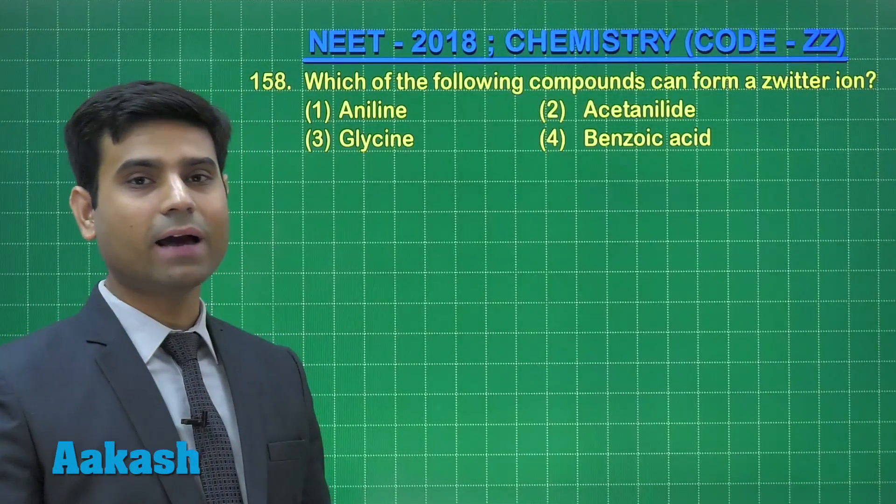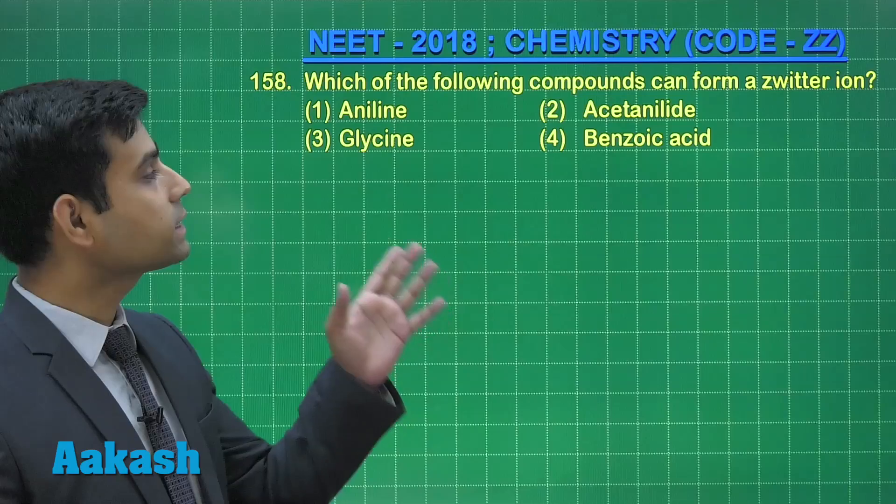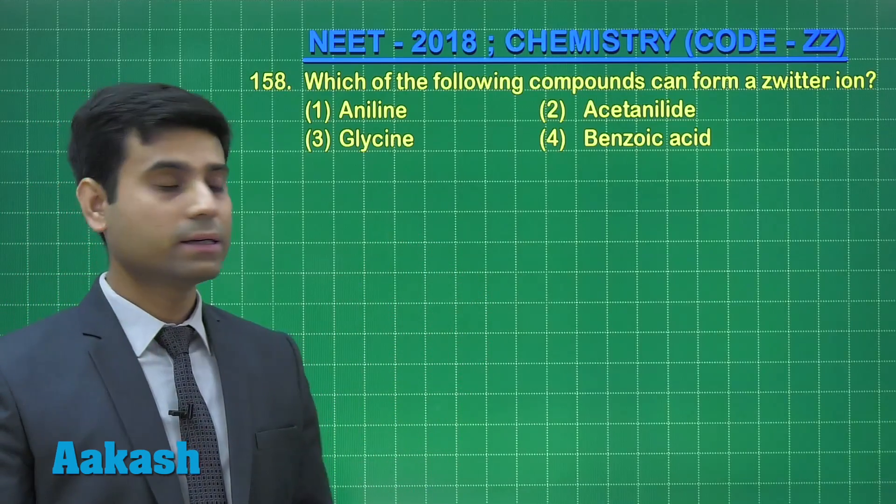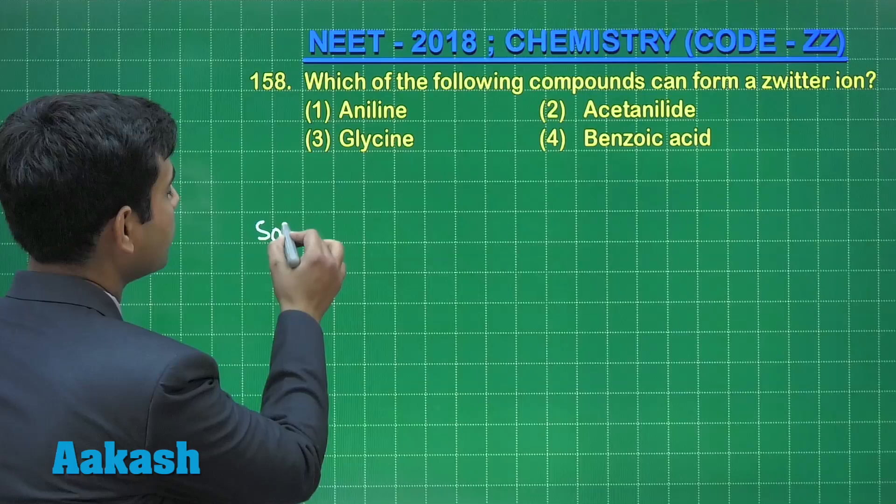Now this is the next question we have, question number 158, which says which of the following compounds can form a zwitterion? The options are aniline. Let's draw the structures of these options.